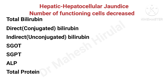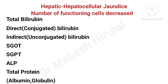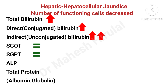In the other scenario of hepatocellular jaundice, where there is a reduced number of functioning cells due to chronic causes like chronic hepatitis or cirrhosis of liver, there will be a rise in total bilirubin, especially indirect bilirubin compared to direct bilirubin. SGOT and SGPT will be normal or towards the lower range, which indicates bad prognosis. Total proteins will be reduced, especially albumin, which is the major cause for ascites, edema and pleural effusions. Altered prothrombin time can also be observed in this scenario.